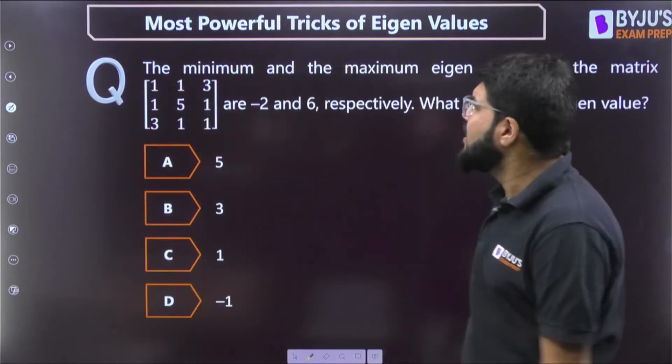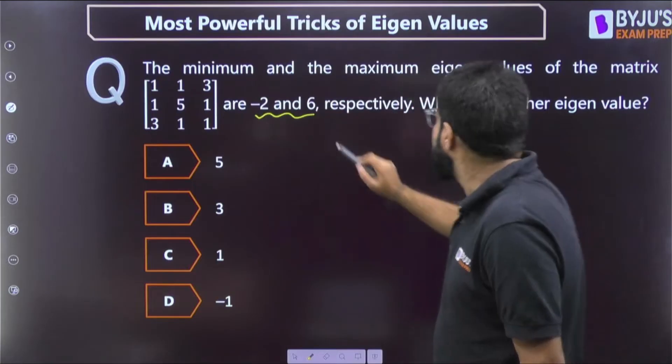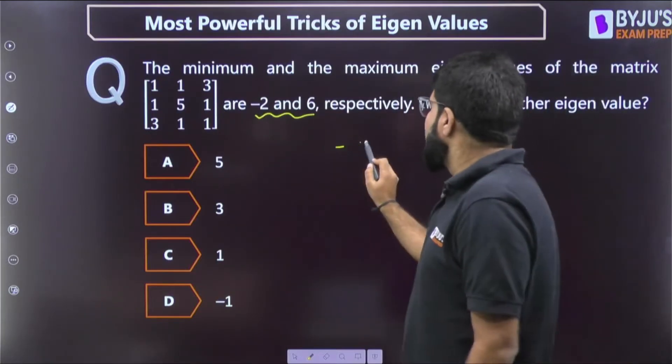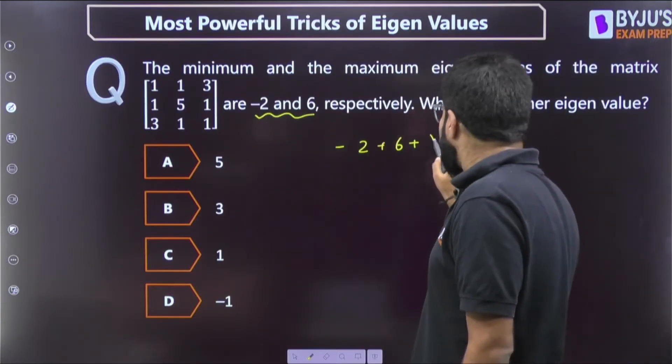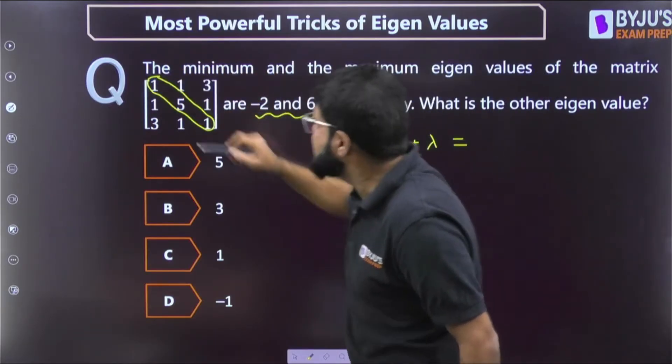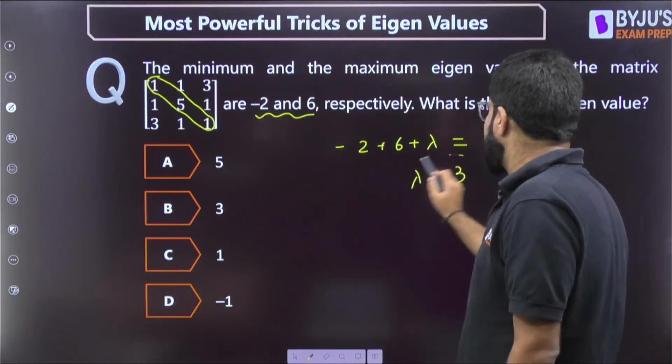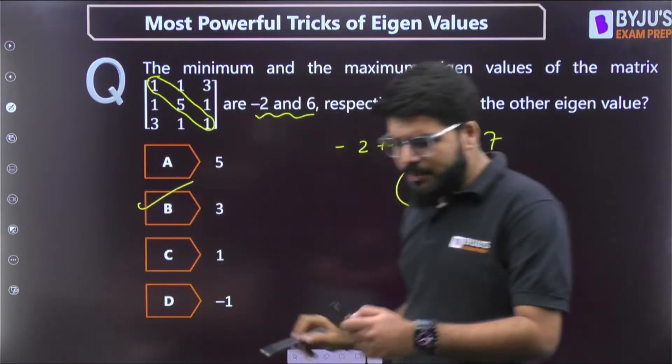Let's take another example. Minimum and maximum eigenvalue of a matrix are given, minus 2 and 6. What is the other eigenvalue? Very simple: minus 2 plus 6 plus that other eigenvalue, because sum of eigenvalue is equal to the trace, and this trace is equal to 7. So this becomes 4, lambda should be 3. Within few seconds I solved the question. Not necessarily MCQ, it can even be NAT type, numerical answer type of question.